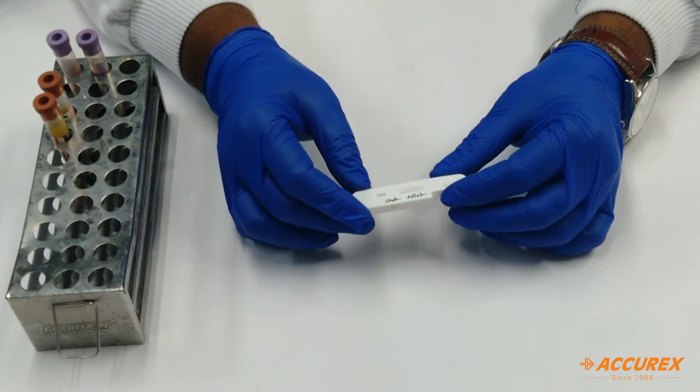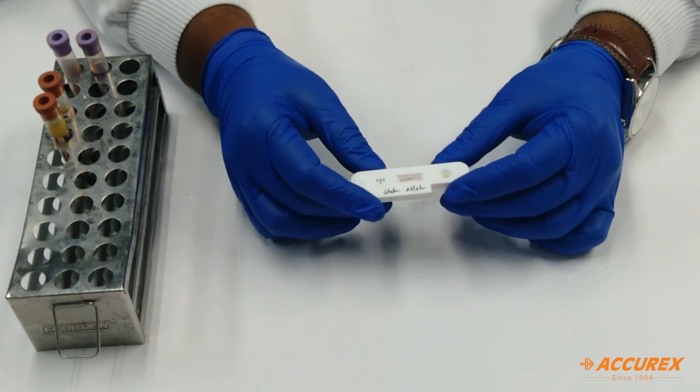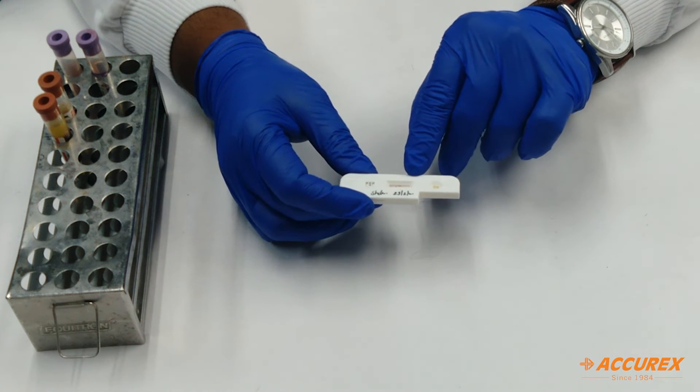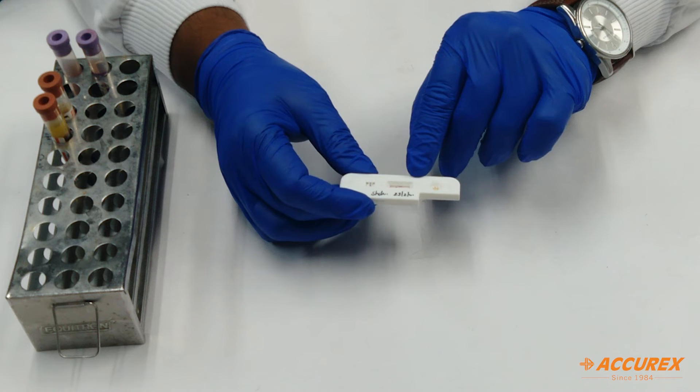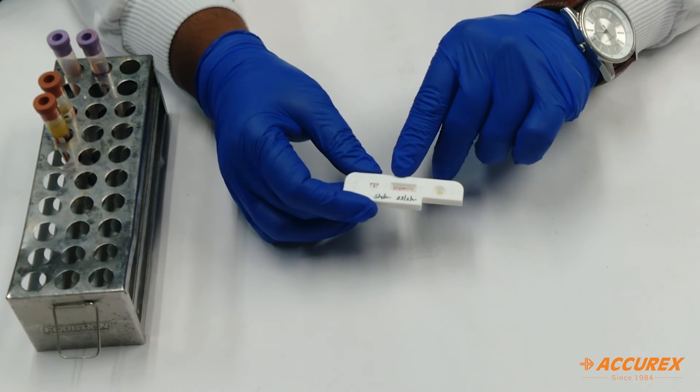You can see the line has developed near the control line. This means the test is negative, and there is no line developed near the test line. If there is a test line, it means it is a positive result. Since only one line has developed near control, the test is negative.